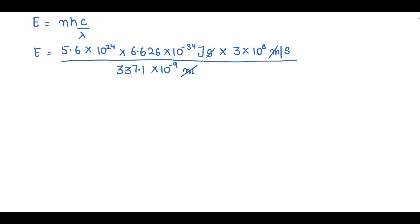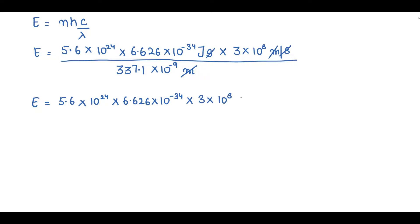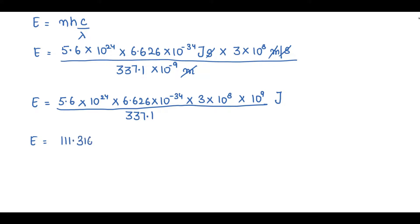Let's cancel units first: meter cancels with meter, second cancels with second inverse. The units of energy come out as joule only. The 10 raised to power minus 9 in the denominator moves to the numerator as 10 raised to power plus 9. So numerically we have: 5.6 × 6.626 × 3 divided by 337.1, which gives 111.316.